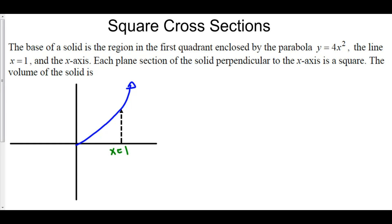The base of a solid is the region in the first quadrant enclosed by the parabola y equals 4x squared, the line x equals 1, and the x-axis. Each plane section of the solid perpendicular to the x-axis is a square.